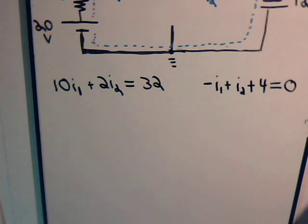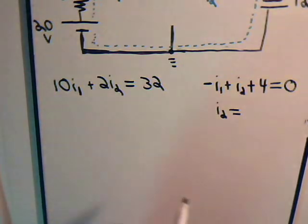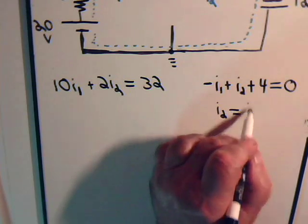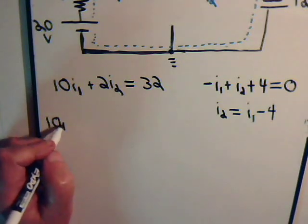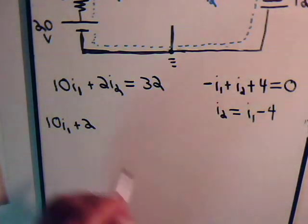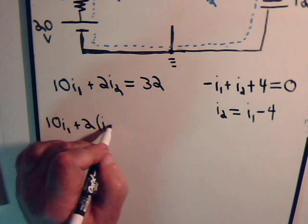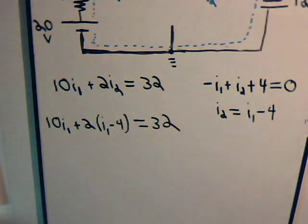We could set this up and solve it with determinants, but this is such a simple setup that we can say I2 equals I1 minus 4. Here we have 10 times I1 plus 2 times I2.